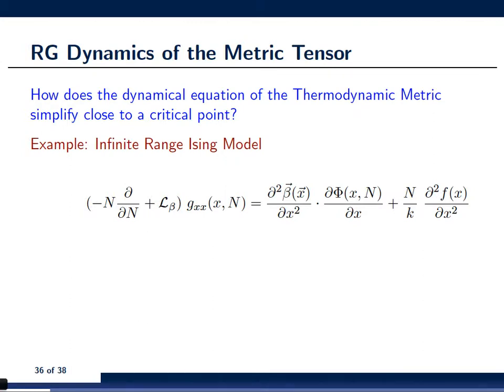And, so, a natural question to ask is, how does the dynamical equation simplify in the vicinity of such a critical point? And, to find an answer to this question, we looked at the infinite range Ising model.